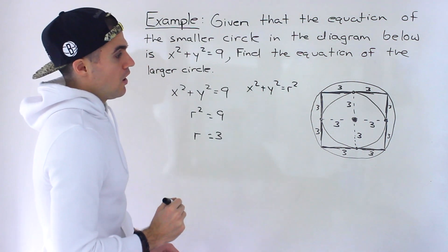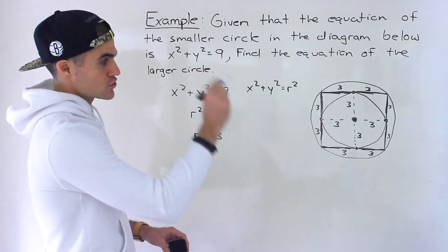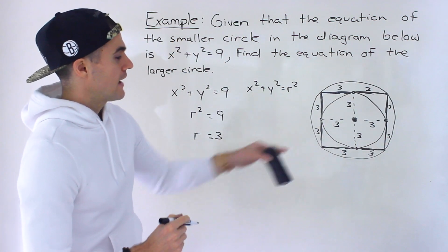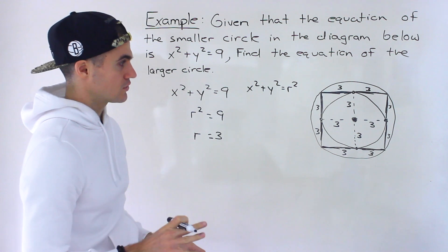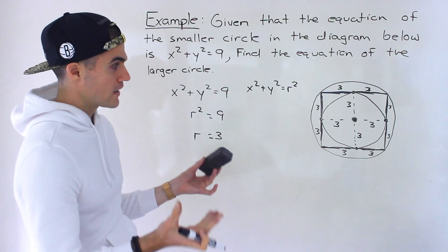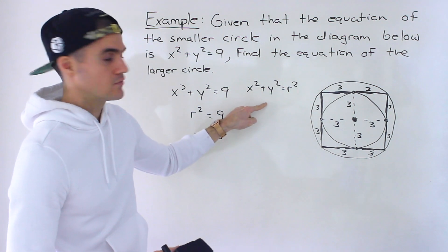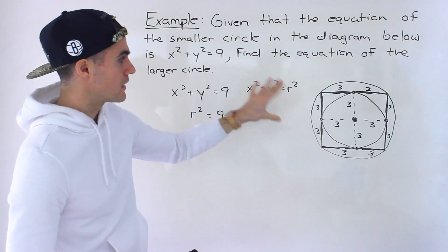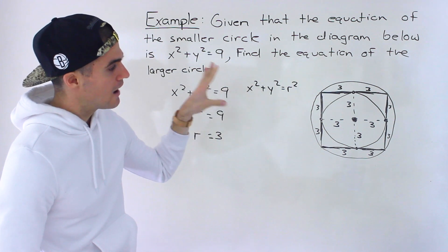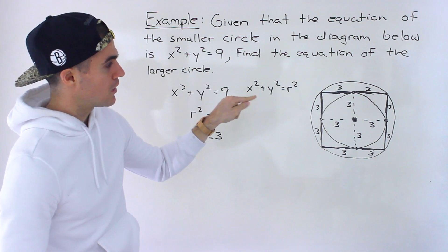Knowing all of that, the question is: how can we find the equation of the larger circle? Really all we need is its radius, because once we have the radius, we can just plug it into the standard form and we have the equation. So we need the radius of the larger circle — then we're done the question.